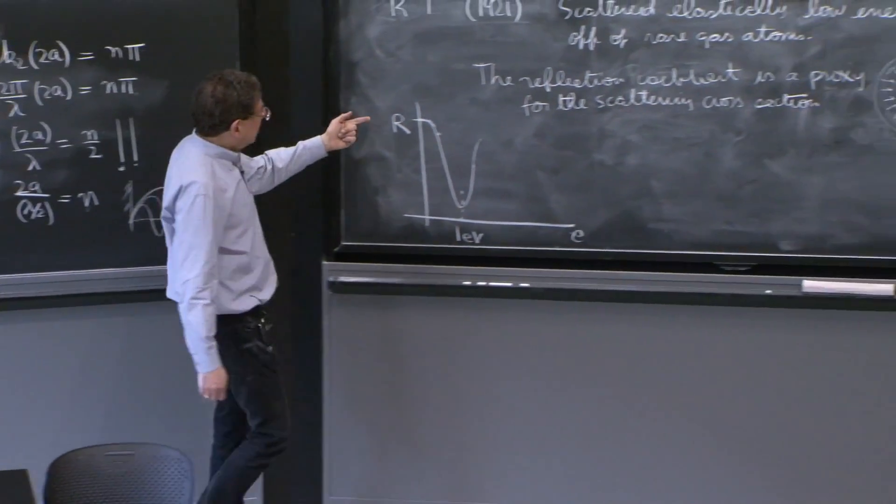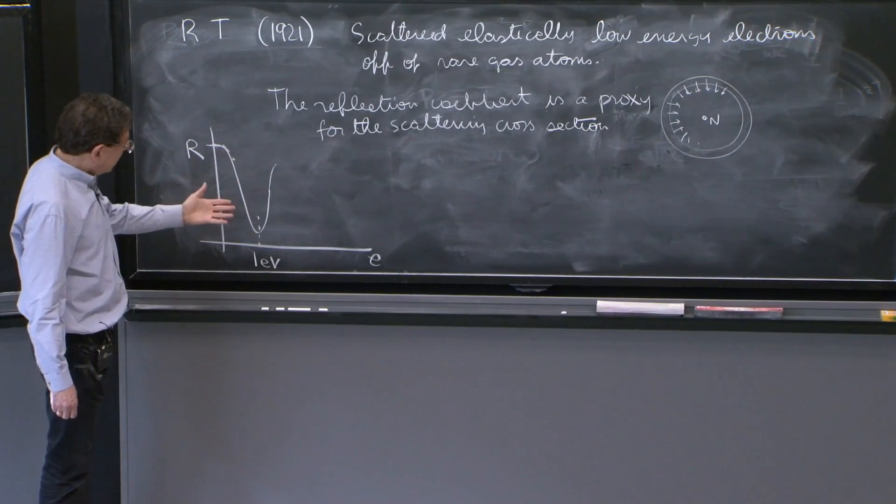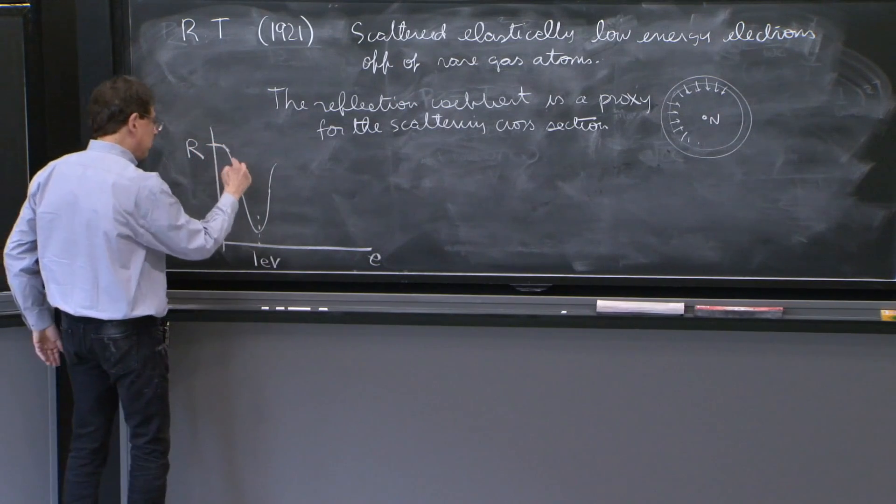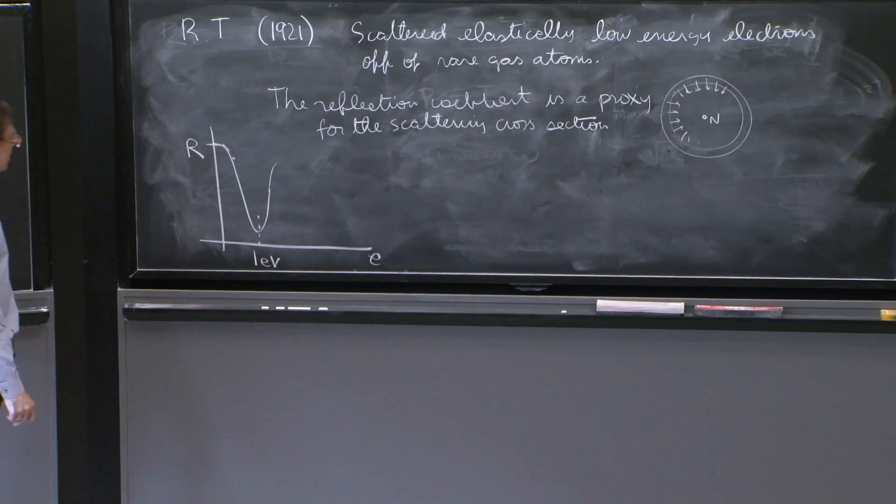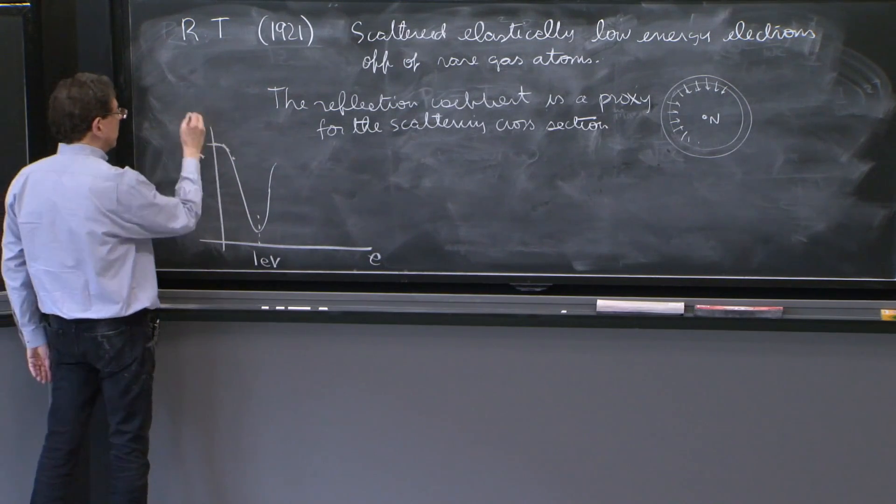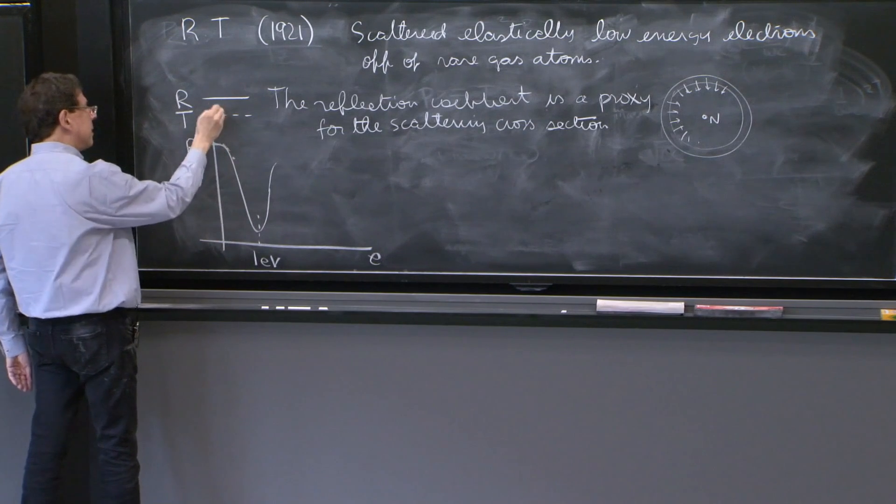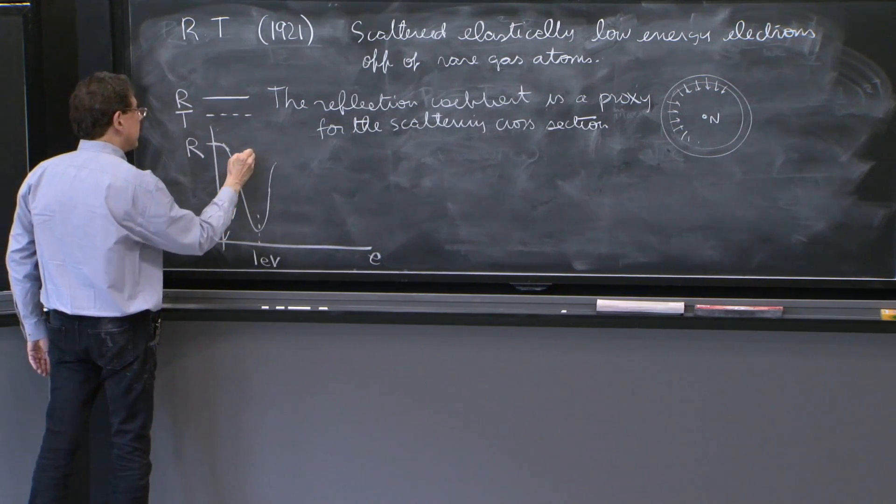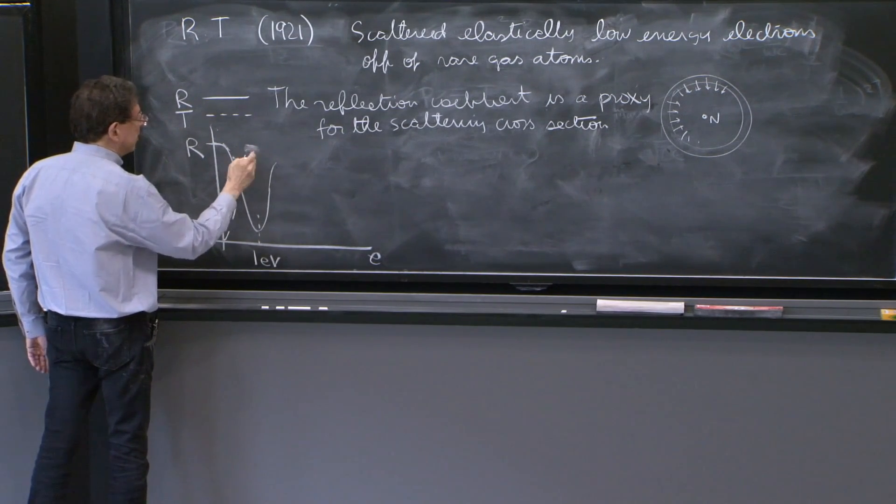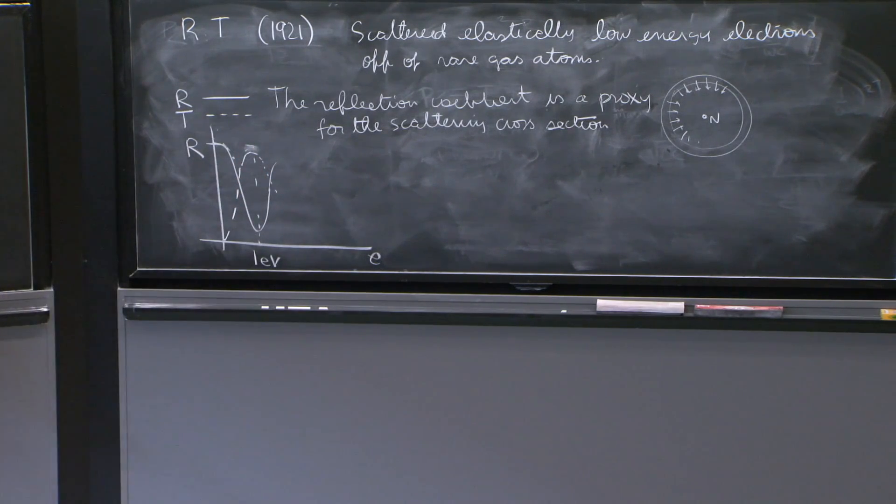So the reflection was going like this. And they had no explanation why it was so sensitive with energy. And why there would be a funny effect going on, that the reflection would suddenly go down and the particles would get transmitted. But if you think of reflection here as continuous line and transmission as dotted line, the transmission that must add to the reflection to be 1 would be going up here, and would have reached near 1 at this value of the energy.